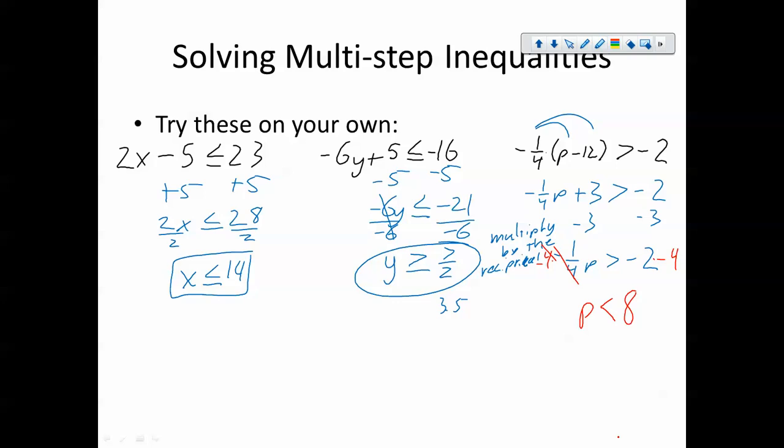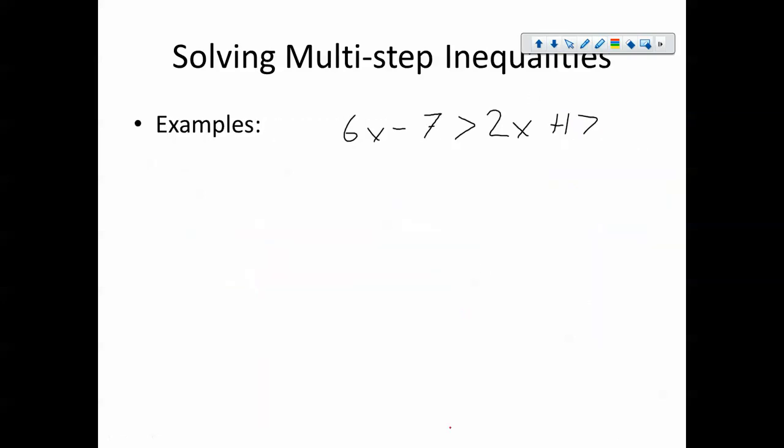If you have any questions on these, feel free to leave them in the comments. You can also reach me in class. So let's move on and do a couple more examples. So here's an example of an inequality with variables on both sides of the inequality sign. Notice on the left-hand side we have the 6x, and on the right-hand side we have the 2x. When we're solving these, just like we did with an equation, we want to get the variable terms on the same side.